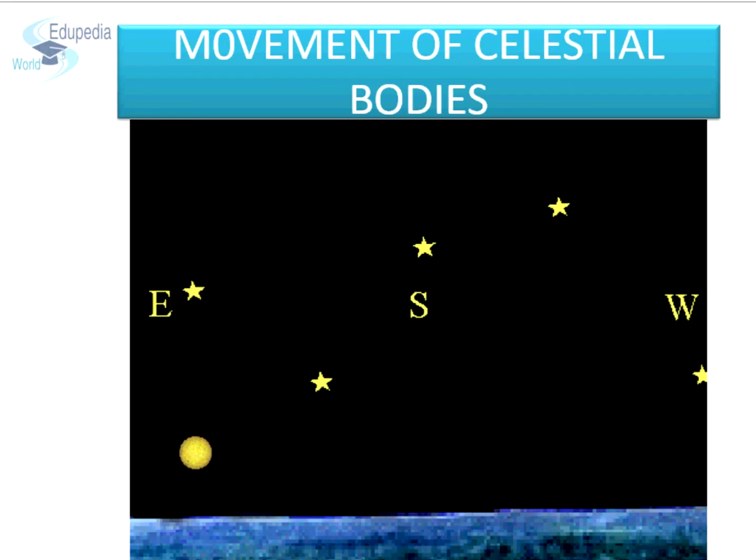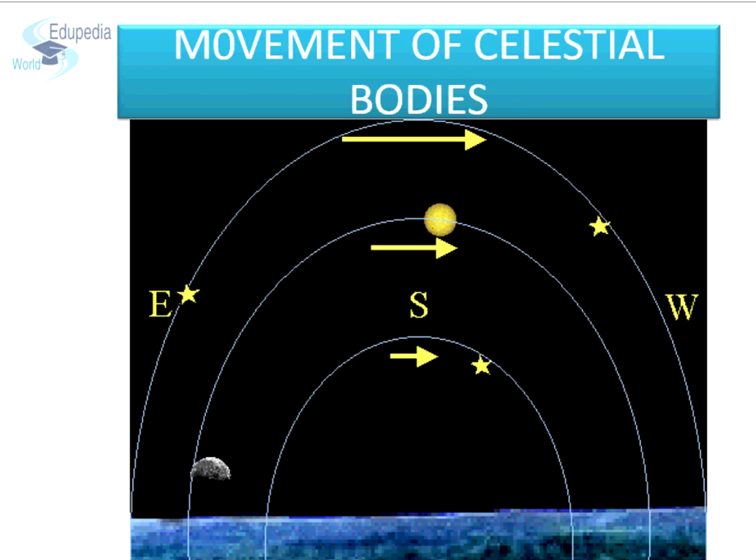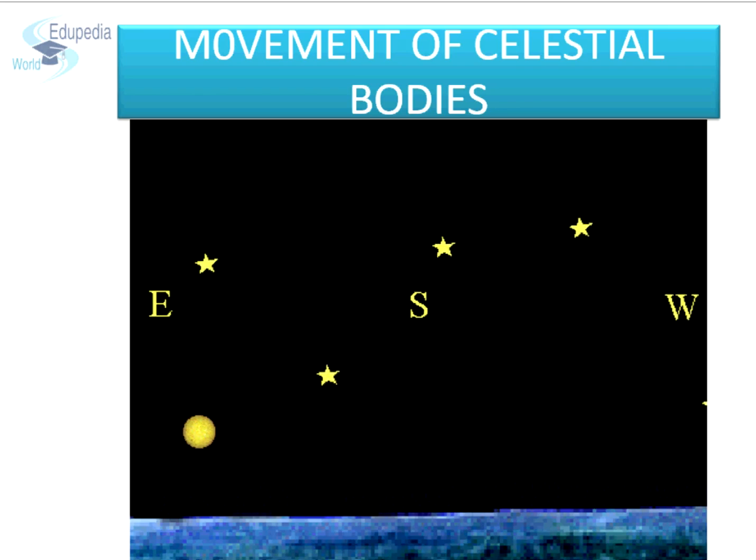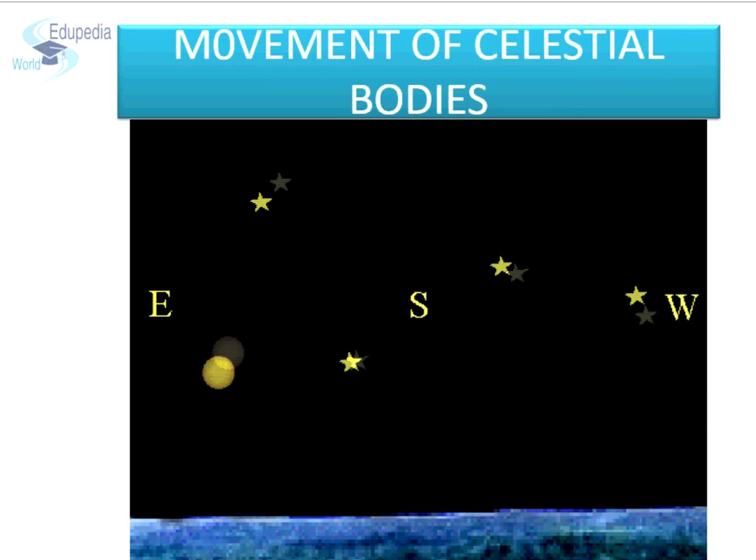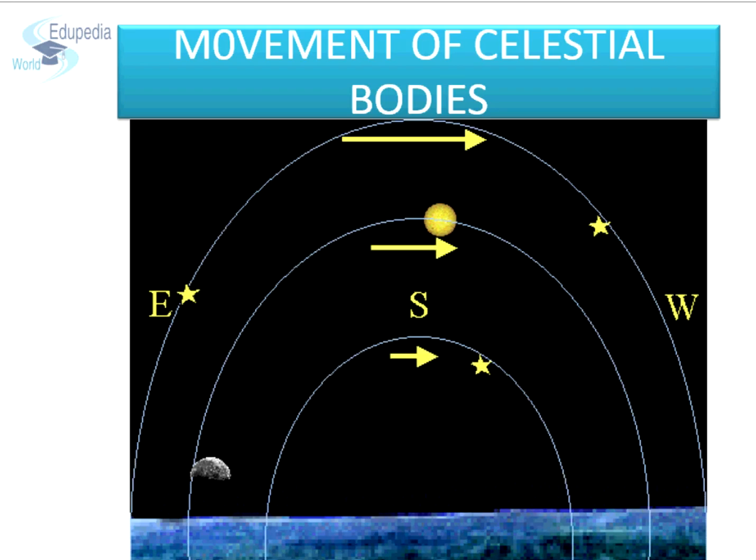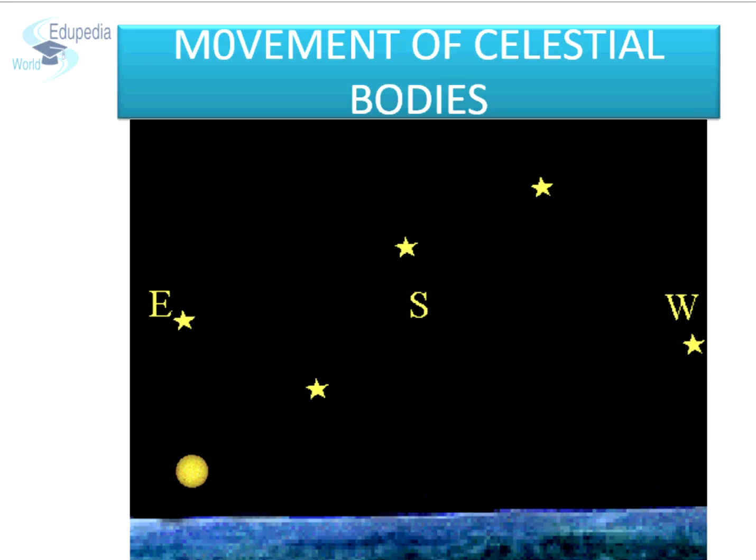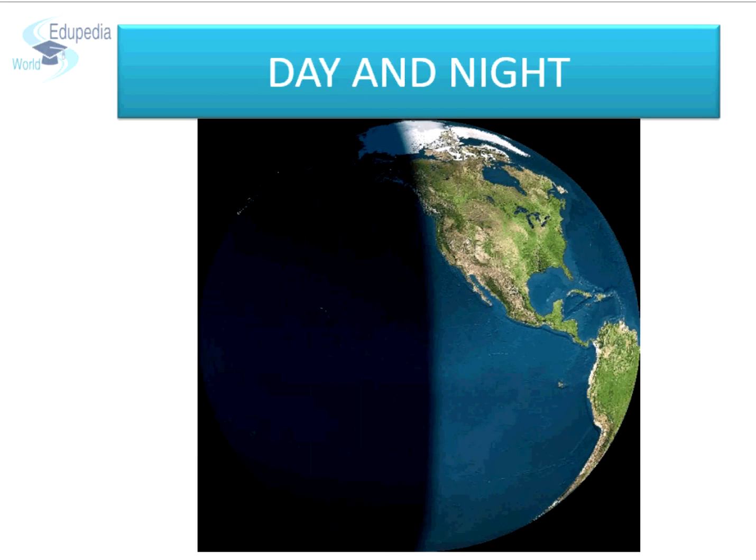Movement of celestial bodies. You all must have experienced that whenever we are travelling in a bus or train, we feel that other objects like trees, houses, etc. are moving. But in reality, they are stationary and we are moving. The same applies on spinning Earth. From any point on the Earth, all celestial bodies appear to move from east to west. This is because the Earth rotates from west to east.